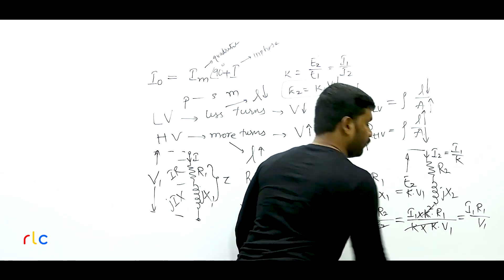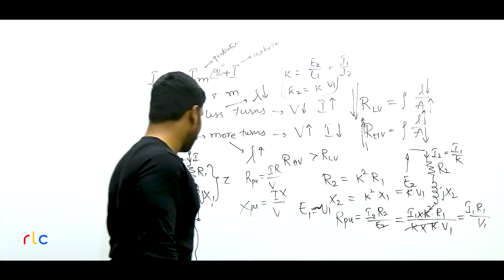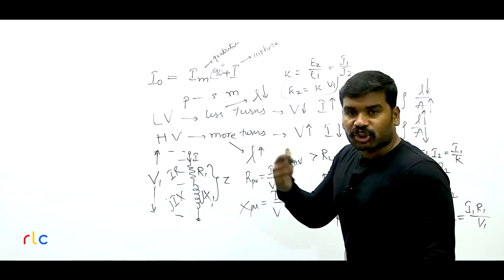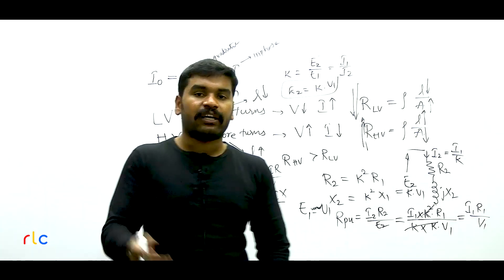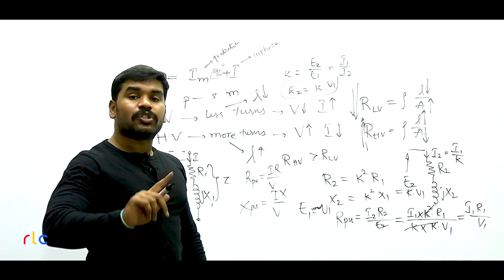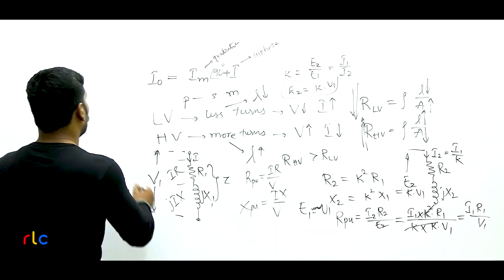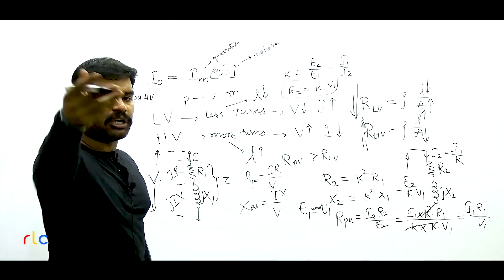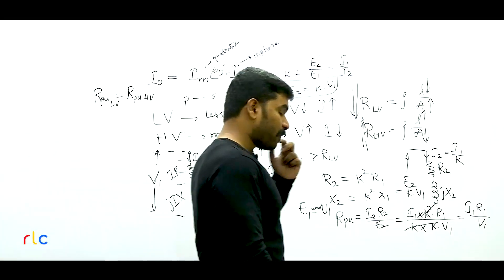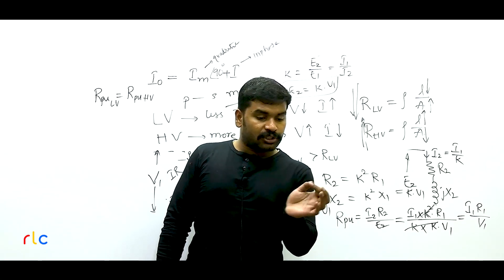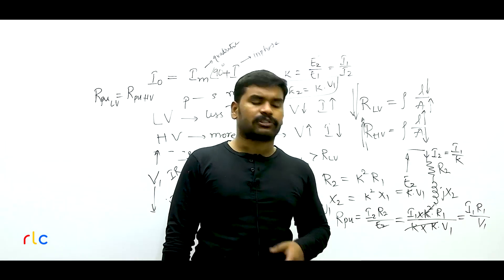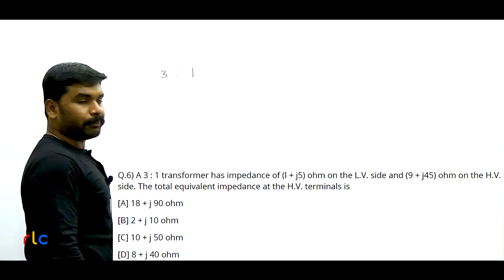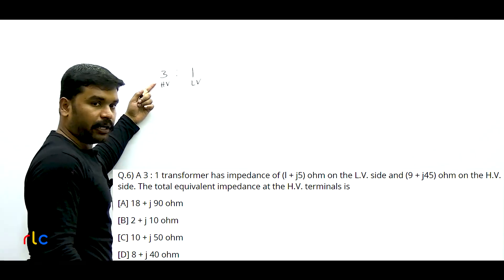Statement 3 — reduce risk of voltage shock in case of insulation breakdown: also correct. If insulation between core and LV winding breaks down, the core rises to only LV potential (11 kV). If HV were near core and insulation breaks down, core rises to HV potential (33 kV) — much more dangerous. Also, insulation stress is higher when HV is near core, making breakdown more likely. So Statement 3 is also correct.